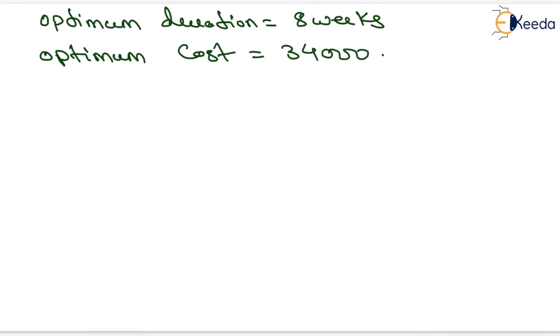The optimum duration is 8 weeks and the optimum cost is 34,000 rupees, as determined from case 2. That is all about this numerical. Thank you, students.